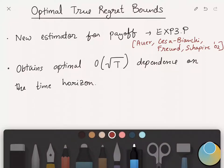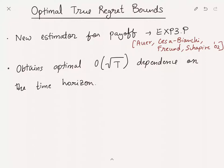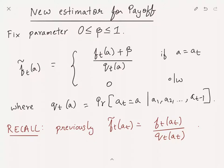The new estimator takes a parameter beta which lies between 0 and 1 as input and constructs the estimates as follows. ft tilde of a at time step t is (ft of a plus beta) divided by qt of a if a equals at, it's 0 otherwise, where qt of a is the same expression as before, which is the probability of the algorithm choosing action a at time t given the previous actions.